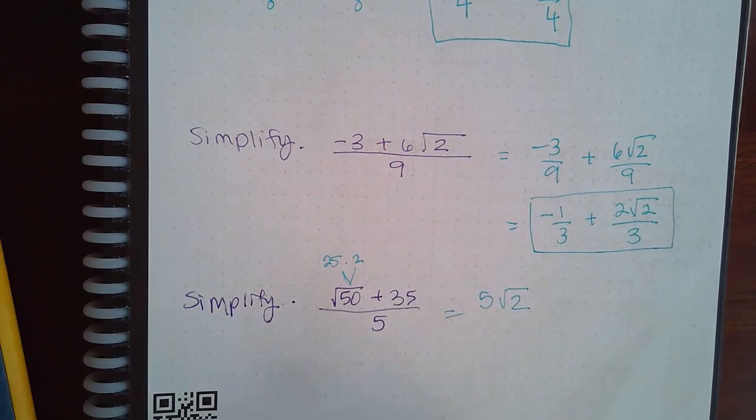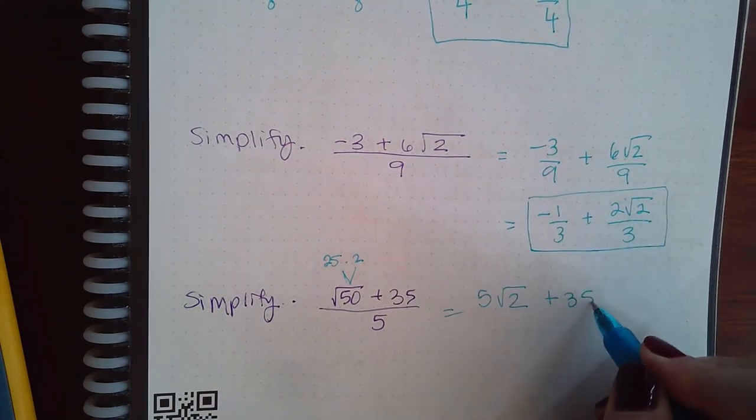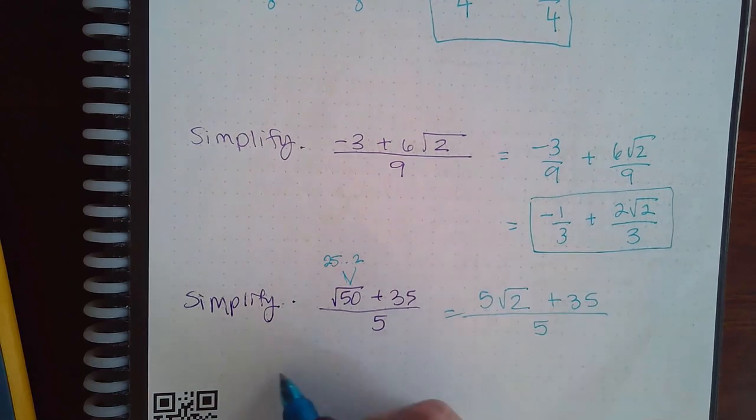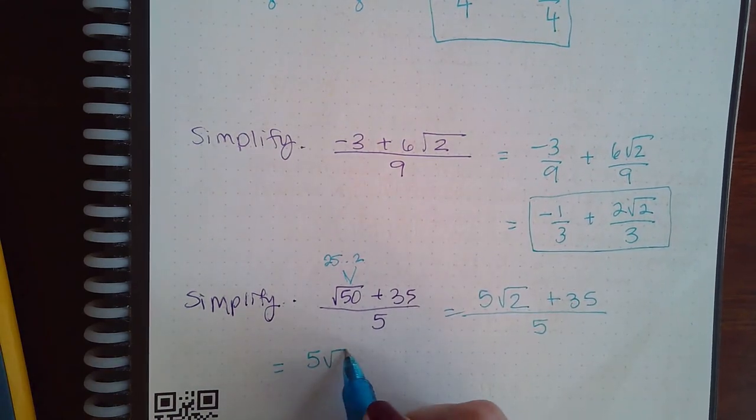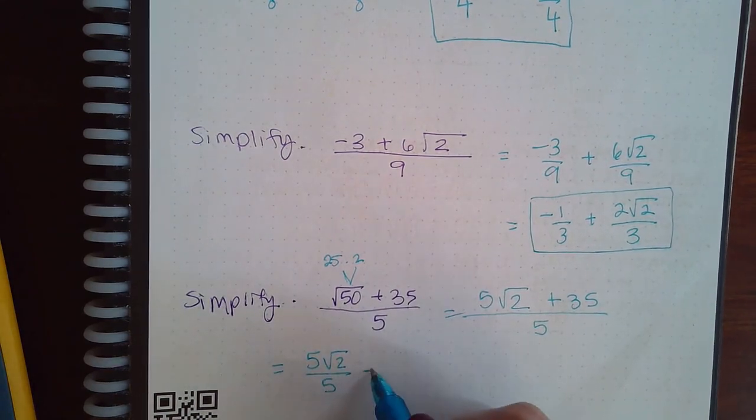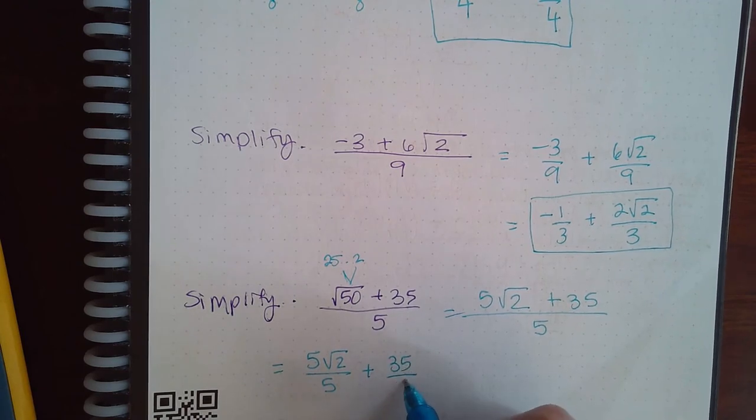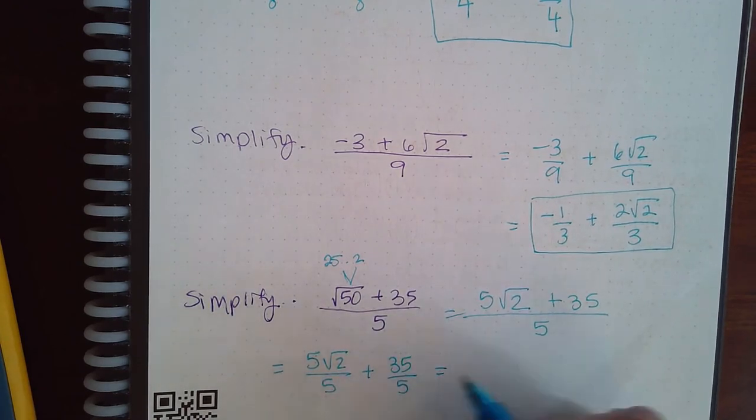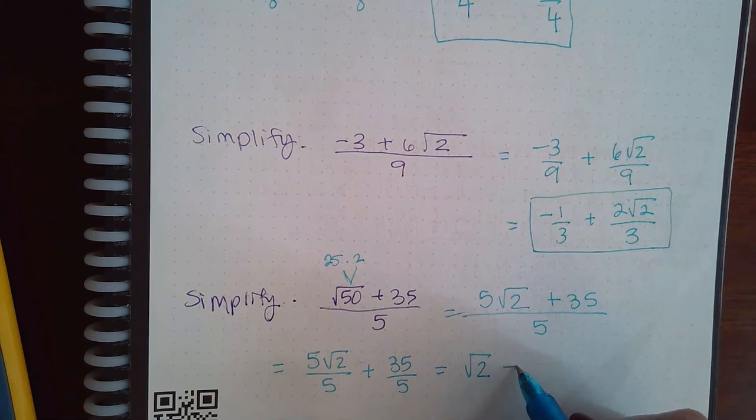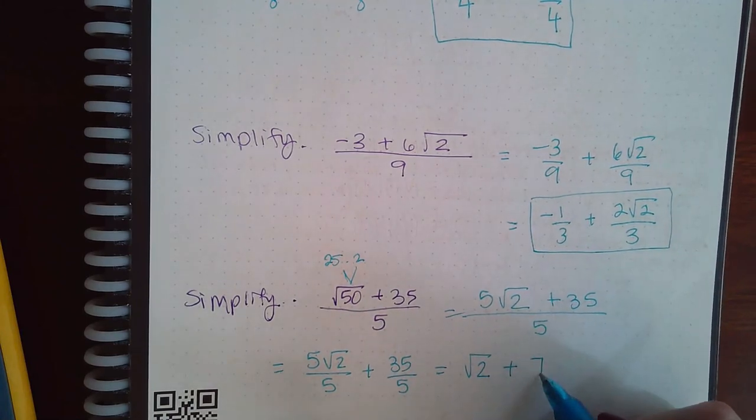Then separate the two terms over 5, and then these will reduce, leaving me with √2. And 35 over 5 is just 7, so we don't have any fractions anymore after the simplification.